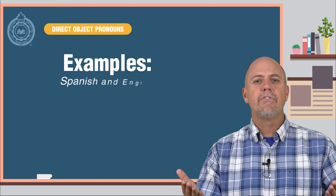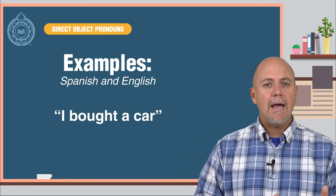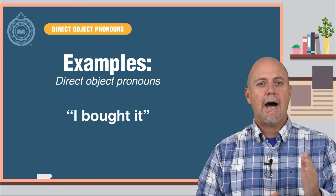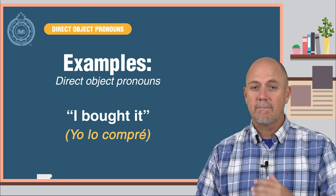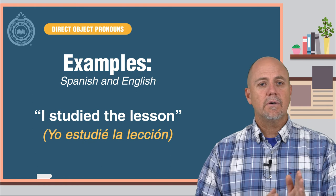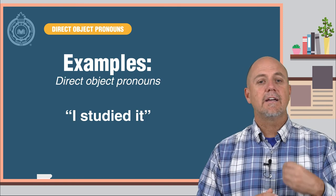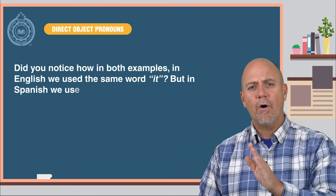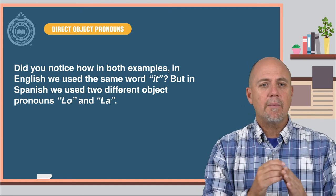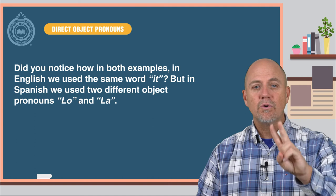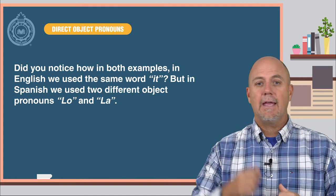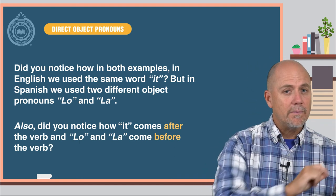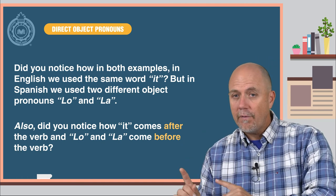Let's look at some examples in both English and Spanish. I bought a car — Yo compré un carro. Now with the direct object pronouns: I bought it — Yo lo compré. I studied the lesson — Yo estudié la lección. I studied it — Yo la estudié. Notice how in both English examples we use the same word 'it,' but in Spanish we use two different pronouns, lo and la. Also notice how 'it' comes after the verb in English, and lo and la come before the verb in Spanish.